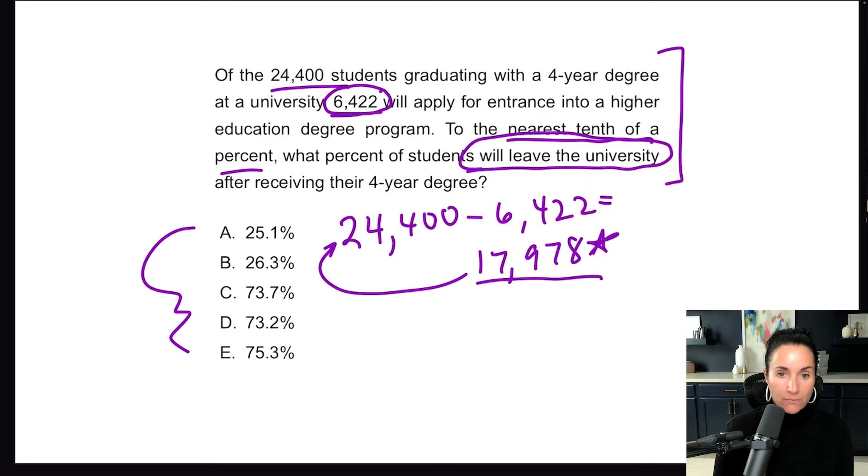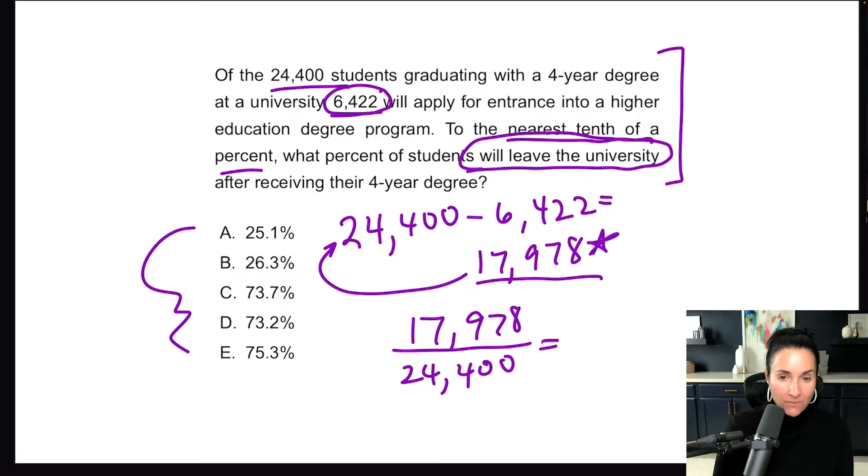Well, what's the percentage of the original? The original number is always important when we're trying to find a percent. And so all we need to do is take 17,978 and divide that by the original. Here's a little thing I like to do. When we're talking about a percent, typically the bottom number is always going to be bigger because you're going to get a point something, something, something as the answer, which you're going to turn into a percent. And when we divide 17,978 by 24,400, we get 0.7368.